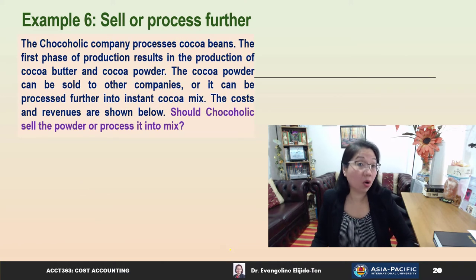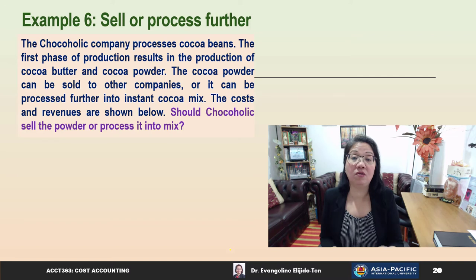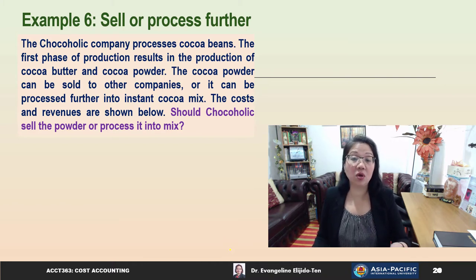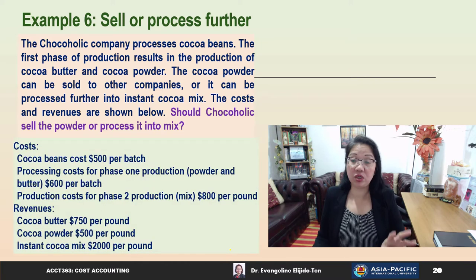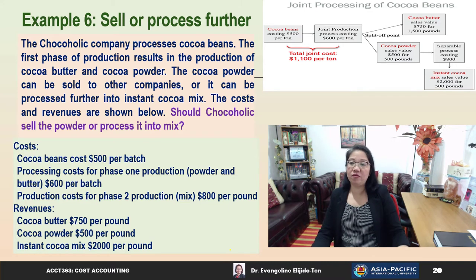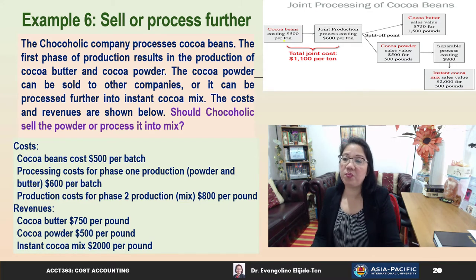The first phase of production results in cocoa butter and cocoa powder. The cocoa powder can be sold to other companies or processed further into instant cocoa mix. Costs and revenues are provided, and the question is: should Chocoholics sell the powder or process it further into cocoa mix? Cocoa beans cost $500 per ton with processing costs of $600 per ton, so the total joint cost is $1,100 per ton.